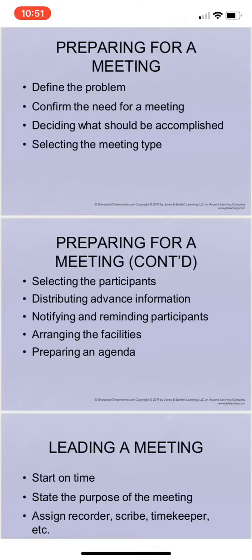Number seven, notify and remind the participants. Written notification should include time, place, preparations to make or materials to bring, the statement of the problem, and the meeting's objectives. Number eight, arrange for proper facilities. Too often a dozen people are ready to meet but have no place to sit. If you need sizable conference facilities, secure them before your notification goes out. Number nine, prepare an agenda. For all but the simplest meetings, use an agenda to guide you, and for long involved meetings, supply it to all attendees with the meeting notification.